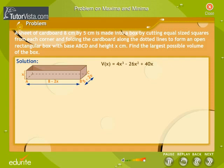We differentiate the equation. Vx is equal to 4x cubed minus 26x squared plus 40x. We get V dash x is equal to 12x squared minus 52x plus 40.